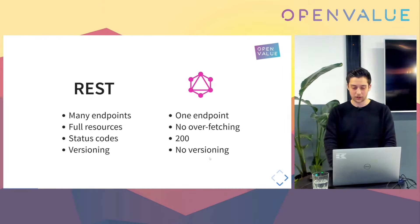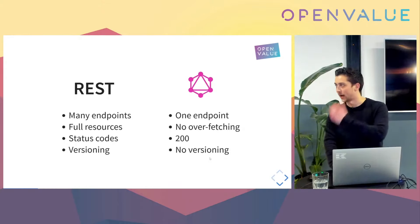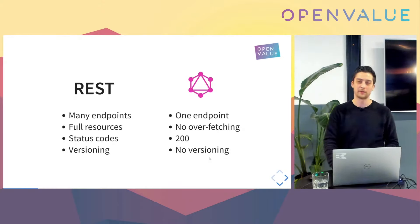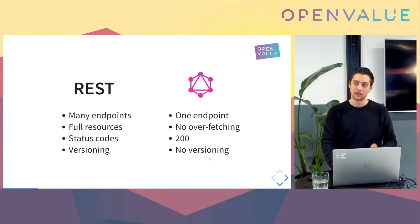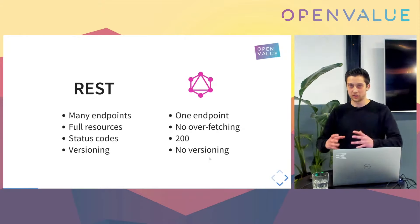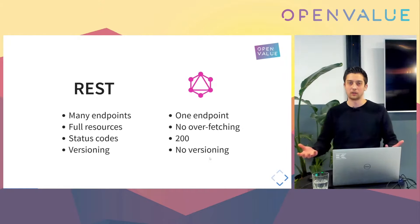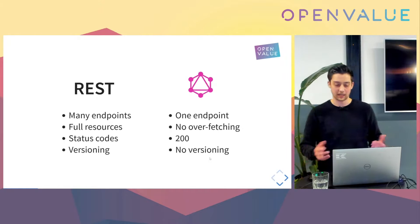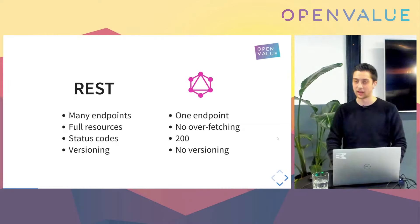In REST you can do versioning — putting it in your header, your URL, whatever. In GraphQL there is no versioning. You support one schema for all your clients and the data shape should provide all the requirements of your client.